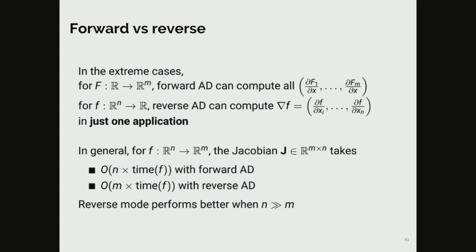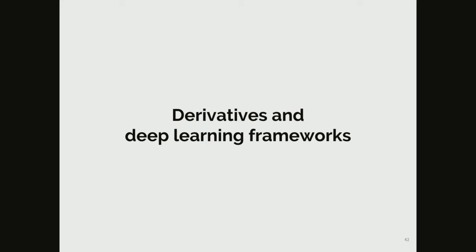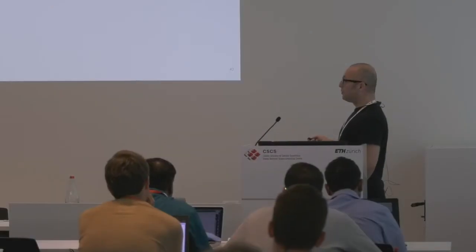In the general case, if you have a function with n inputs and m outputs, backpropagation is not always the most efficient choice. Backpropagation is only better if you have significantly more inputs than outputs. In the other case you would prefer forward differentiation, but this case is not encountered so much in the machine learning field.